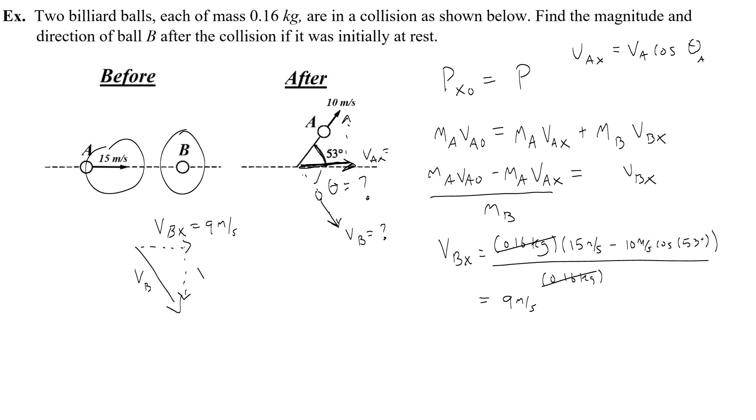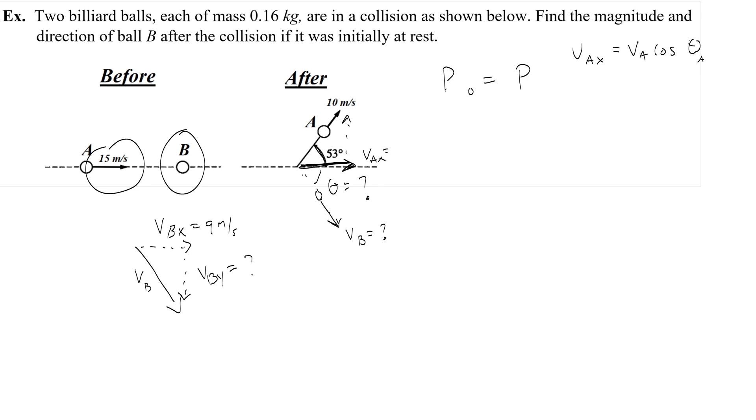Now what we need to do is figure out what will vby end up being. To find this we're going to take a look at the y momentums. Since we already found vbx I'm going to get rid of all this. Now let's look at the y momentums. In the beginning there is no y momentum because ball a is moving to the right it's not moving up or down. However at the end there's going to be a y momentum which we can call vay and vay is opposite of 53 so we would write va sine theta a.